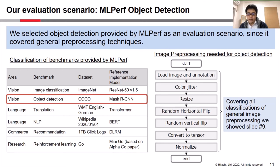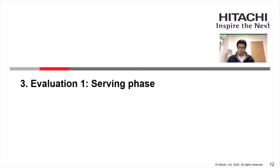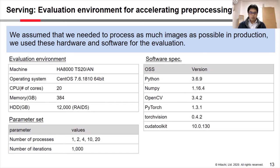Now we are going to explain how we evaluated the effect of accelerating preprocessing in the serving phase. We assumed that we needed to process as many images as possible in production. We used specific hardware and software for the evaluation. The evaluation environment used a machine with multi-CPU cores.